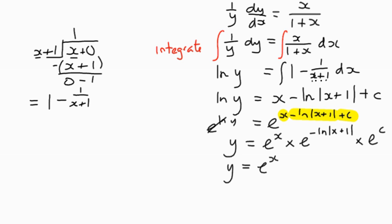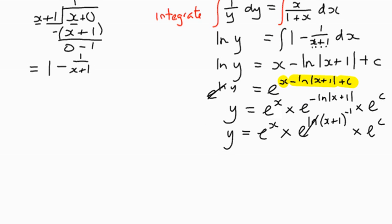E to the x stays this way. We've got a negative log of x plus one, so if we think about the idea that negative log is, I'll just write this out: log of x plus one to the power negative one times e to the c. We can see that then that just becomes y equals e to the x multiplied by x plus one to the power negative one.